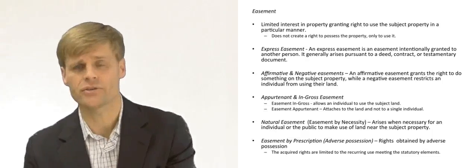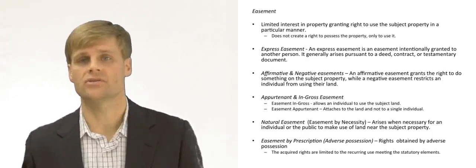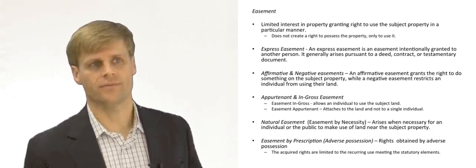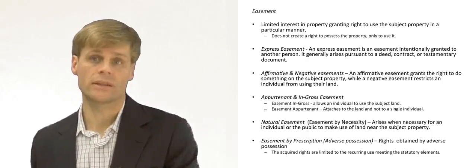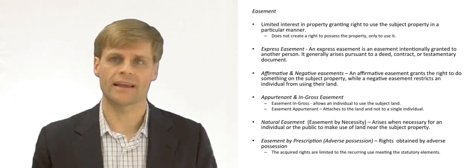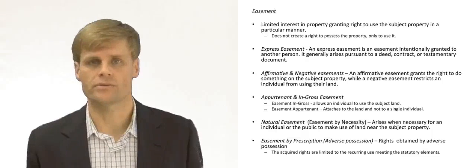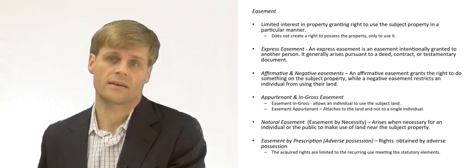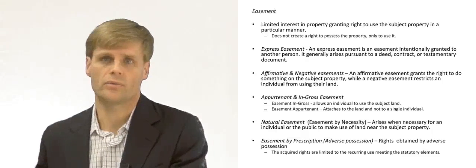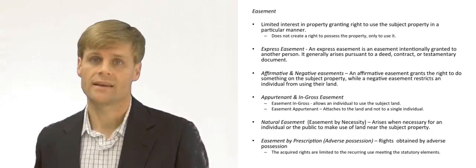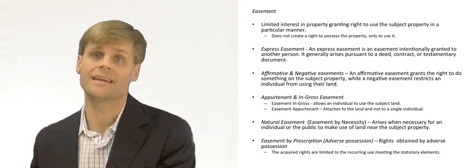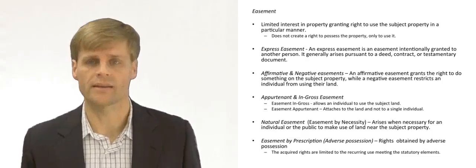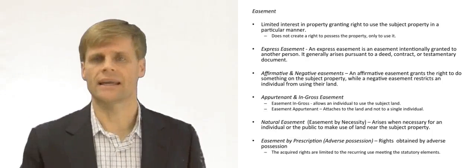That easement could attach to the land, meaning no matter what, the easement exists for anybody who's going to use it, or if you sell the land on the other side, it goes with the land. Or it could be an easement in gross, which means it belongs to the person themselves. The individual granted the right of easement holds it and may not be able to transfer it, because it belongs to them but doesn't specifically attach to the land — if the land is sold, it may not go with it. So there's the easement appurtenant and the easement in gross.